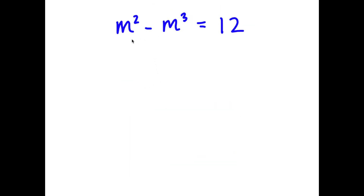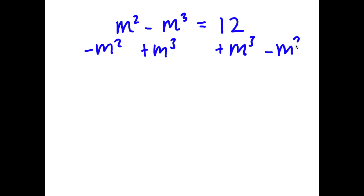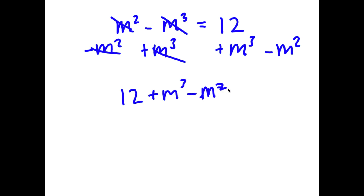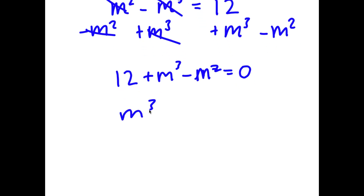In this problem, I have m squared minus m to the power of 3 is equal to 12. To solve this, I'm going to add m to the power of 3 on both sides and subtract m squared on both sides. These two cancel out, and now I have 12 plus m to the power of 3 minus m squared is equal to 0. I'll rewrite this as m to the power of 3 minus m squared plus 12 is equal to 0.